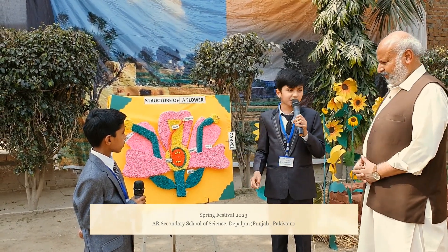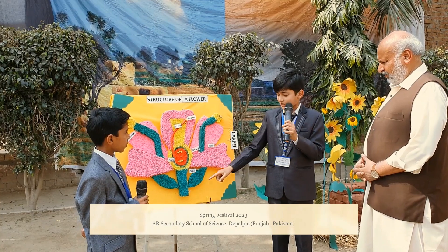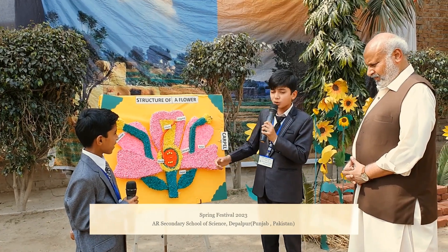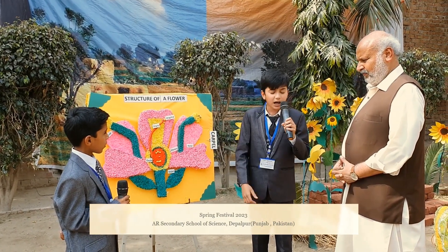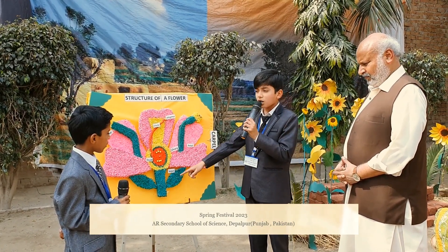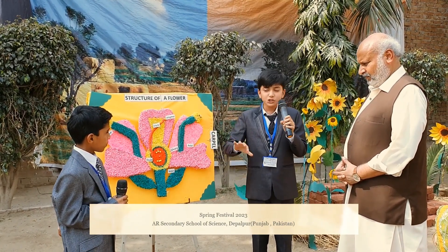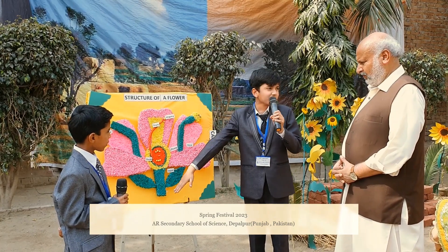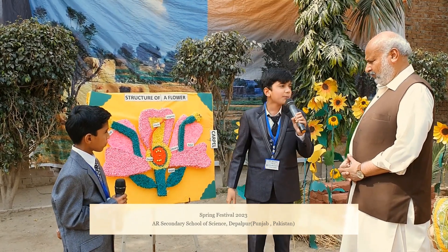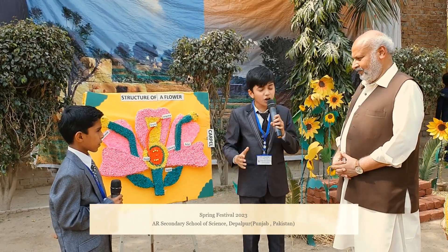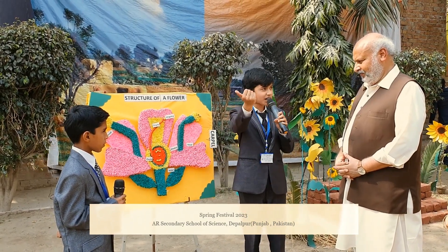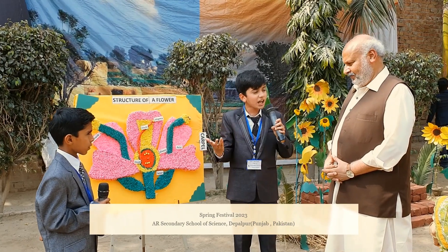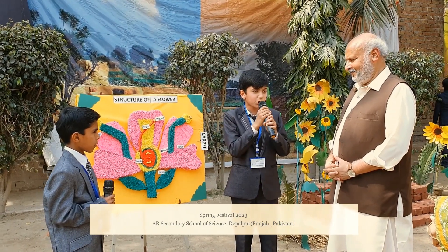Sepals are green leaves. It is the outermost whorl of the flower. The role of the sepals is to protect the flower in the bud stage. The role of the petal is to attract insects and birds for pollination.